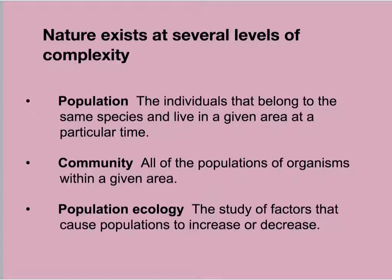The third level of complexity is a community, which incorporates all of the populations of organisms within a given area. Boundaries may be defined by states or federal agencies, and humans are responsible for managing these areas. Scientists who study communities are interested in how species interact with one another. Communities exist within an ecosystem, which consists of all the biotic and abiotic components in a particular location. Ecosystem ecologists study flows of energy and matter, like the cycling of nutrients. The largest and most complex system is the biosphere, which incorporates much of Earth's ecosystems.